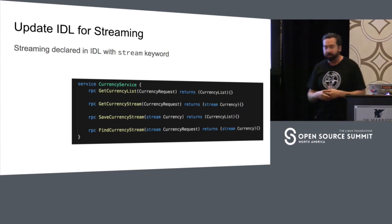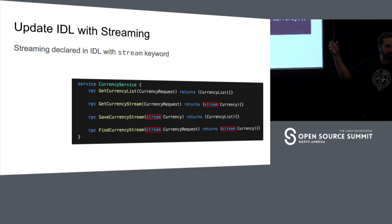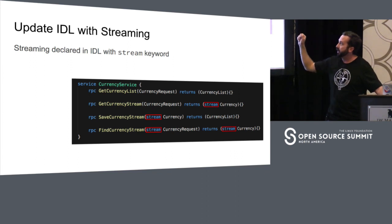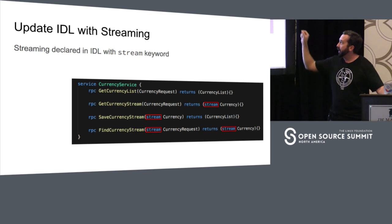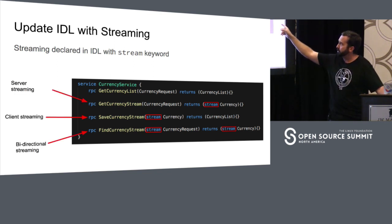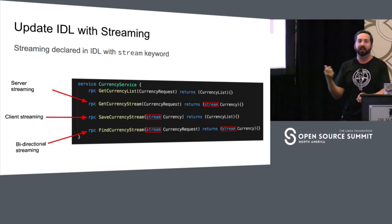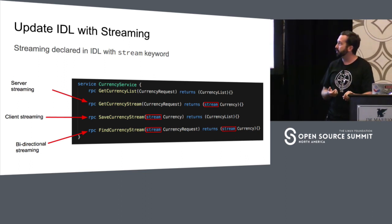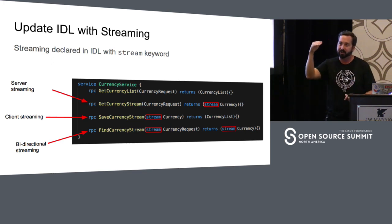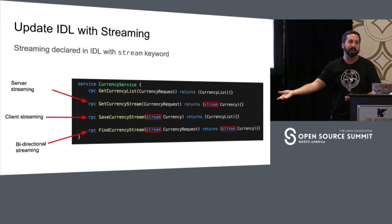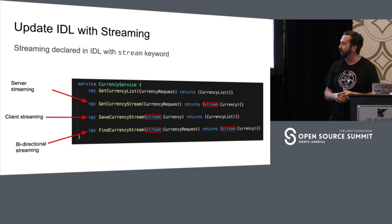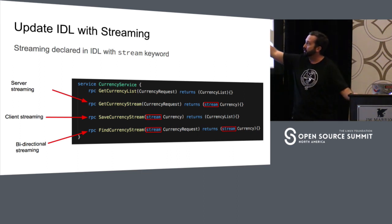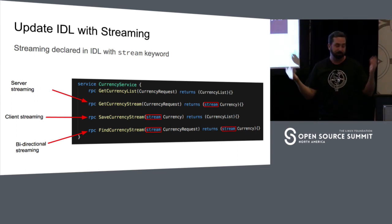If I update my IDL to include streaming, at the top you have the existing non-streaming GetCurrencyList definition unchanged. Stepping down, we've got three different stream types: server streaming — where the server chunks results to the client; client streaming — the opposite, where maybe the client is on Periscope recording and sending chunks upward; and bidirectional streaming — where the communication both ways is streamed. All three are possible in gRPC.